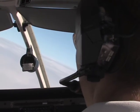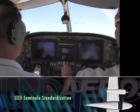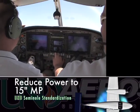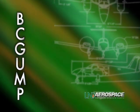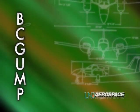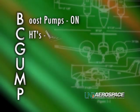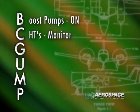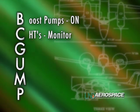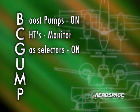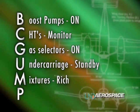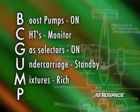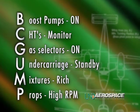After completing the clearing turns, the pilot should reduce power to 15 inches of manifold pressure for maneuver setup. The pilot should use the BC GUMP mnemonic to aid in initial aircraft configuration. The boost pumps should be on, cylinder head temps monitored, and the warmest running engine noted for execution of the maneuver. Gas: verify both fuel selectors are in the on position. Undercarriage will stand by until execution of the maneuver, and propellers smoothly placed at high RPM.